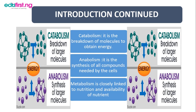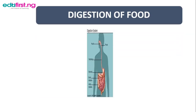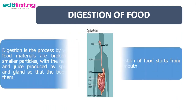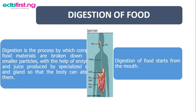Metabolism is closely linked to nutrition and the availability of nutrients. Now, the ingestion of food. The food we take into our mouth cannot be used by the body just as we have eaten it. Our body needs to break it down into particles that it can use to build what it wants to build. Digestion is simply the process by which complex food materials are broken down into smaller particles with the help of enzymes and juices produced by specialized cells and glands, so that the body can absorb them.